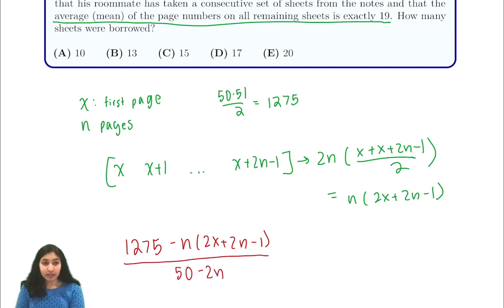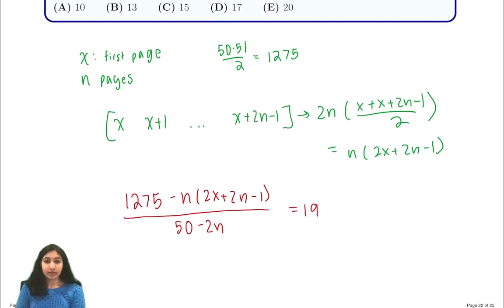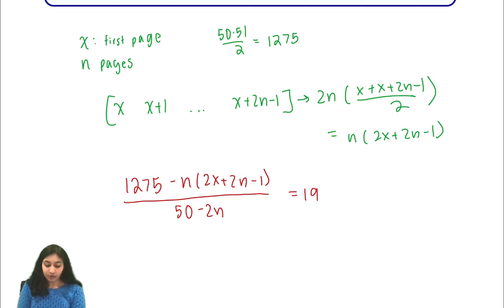So when we multiply both sides by 50 minus 2n, we get 1,275 minus n times 2x plus 2n minus 1 is equal to 950 minus 38n.